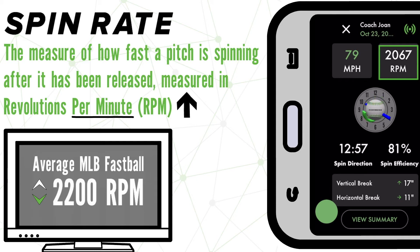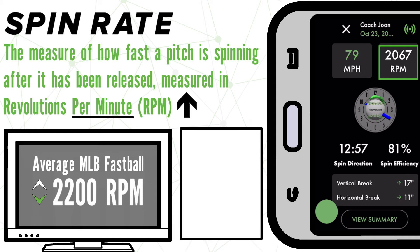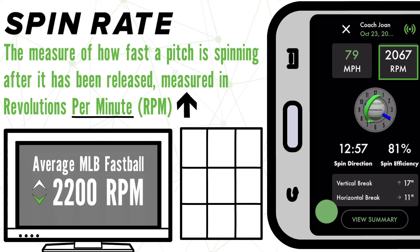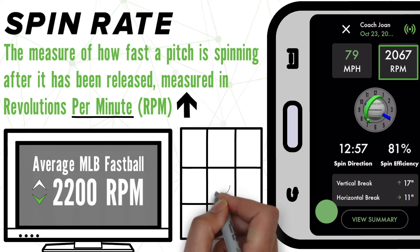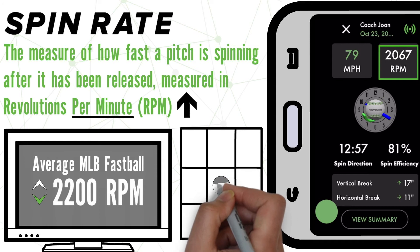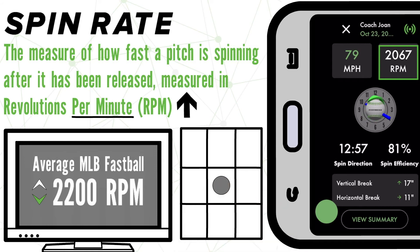But why does that matter? Let's imagine a situation in which we throw the exact same pitch three times in a row to the same location. The only difference between the three would be a change in their spin rates. Each pitch falls naturally due to gravity, but your spin rate determines how much.